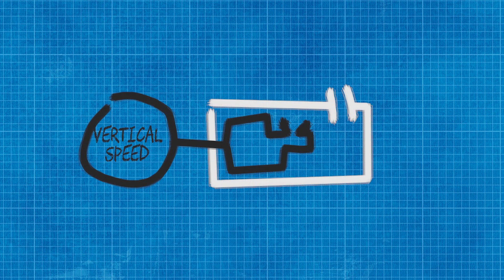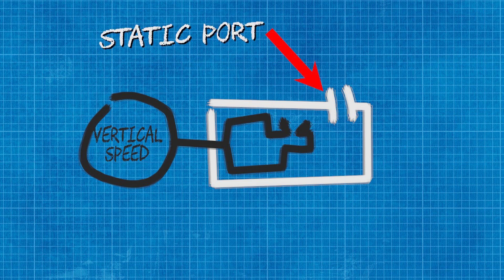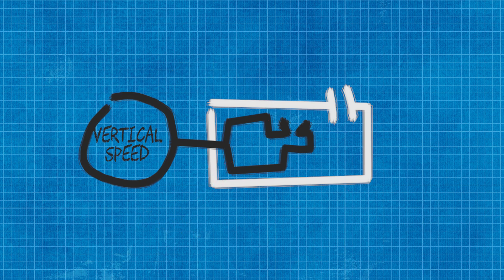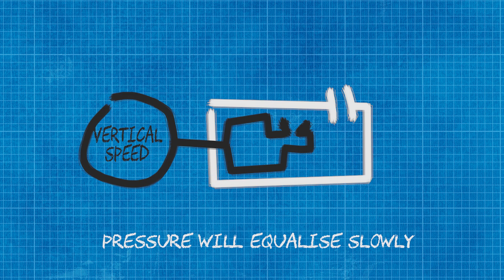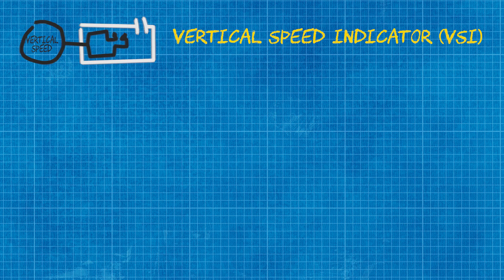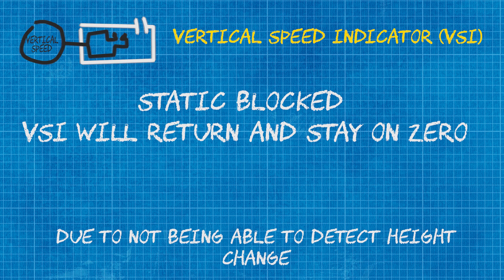Our vertical speed indicator is slightly different. The vertical speed indicator measures static air pressure with static air pressure. However, inside the bellows there is a calibrated leak, so as we climb the air pressure inside the bellows will have to slowly equalize with the air pressure outside the bellows. Therefore, if the static air pressure valve gets blocked, then the vertical speed indicator will return to zero.